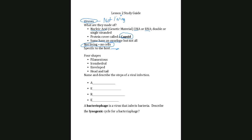Viruses are very specific to a host — often a particular host cell within a host organism. They can't replicate outside their host. Viruses have been classified by their type of genetic material, how it's replicated inside the cell, and the shape of the virus. The steps in a viral infection start with attachment: the virus attaches to the host cell via the envelope, capsid markers, or a receptor on the host cell.